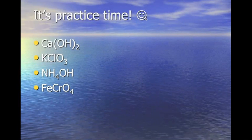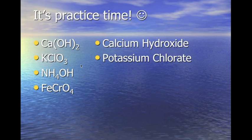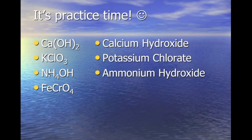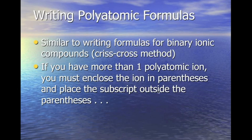Examples: calcium with OH (hydroxide) is calcium hydroxide. Potassium bonded to chlorate is potassium chlorate. Ammonium bonded to hydroxide is ammonium hydroxide. Iron bonded to chromate: chromate has an oxidation number of negative 2, so iron must be 2+ — when we crisscross, both values are 2 and they reduce. This gives us iron(II) chromate. Writing polyatomic formulas uses the same crisscross method as ionic compounds, just make sure to put the polyatomic ion in parentheses.